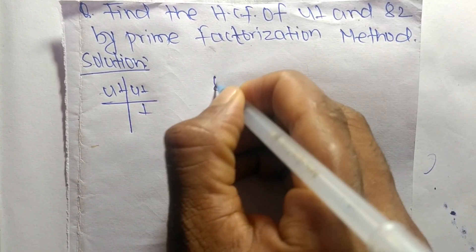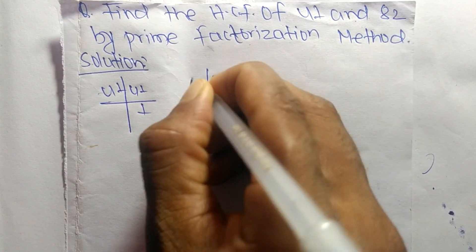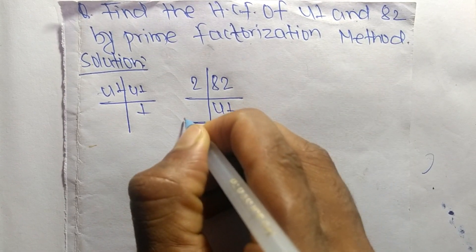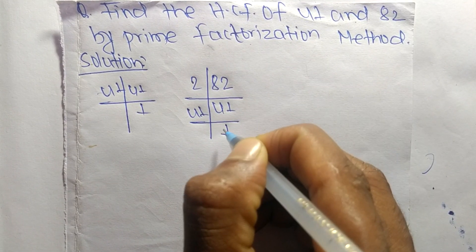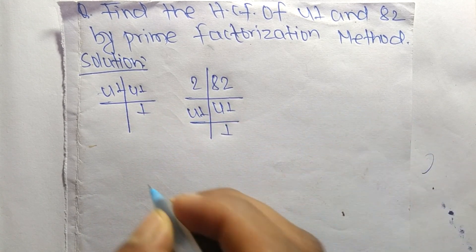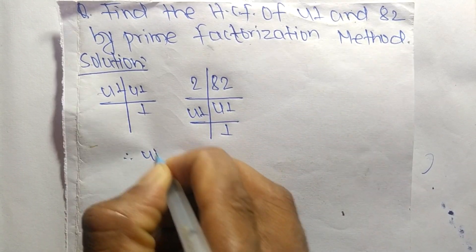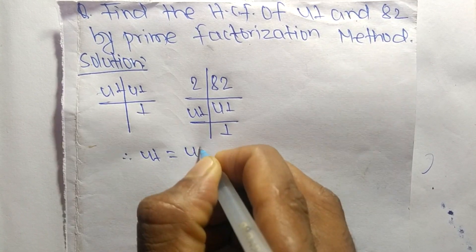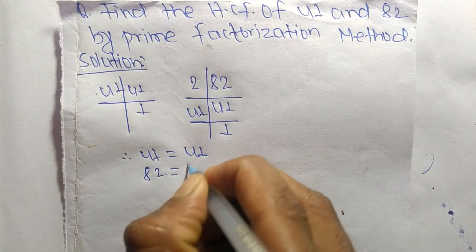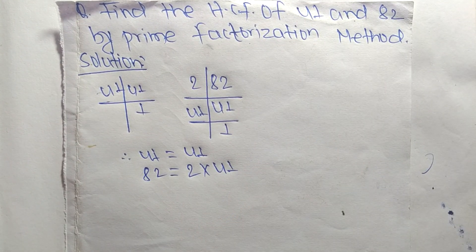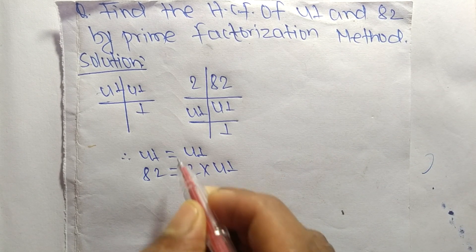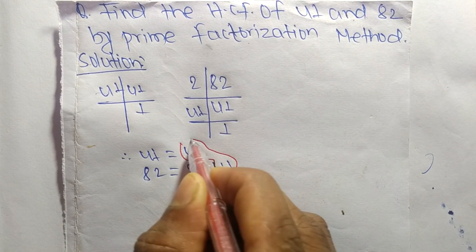The prime factors of 82 are 2 times 41, which equals 82. So we can write: 41 = 41, and 82 = 2 × 41. Now we select the common factors from these prime factorizations. The common factor here is 41.